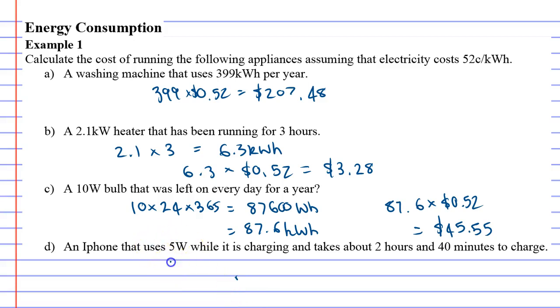We know it's 5 watts and we've got to multiply it by the amount of time it's been running for. It's a little challenging because it says 2 hours and 40 minutes, but I'm going to say 40 minutes is the equivalent of 2 thirds of an hour. So I'm going to do 5 times 2 and 2 thirds.